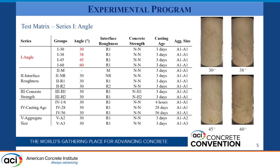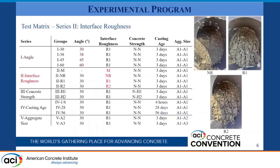Here is our experimental program. We have a test matrix structured based on prevalent variables found in current literature. We have five different series, and in each series we have different groups corresponding to different alternatives of that variable. For the first series, we investigate different cold joint inclinations of the slant shear specimen, where theta is measured from the vertical. In each group, we fabricate three slant shear specimens.